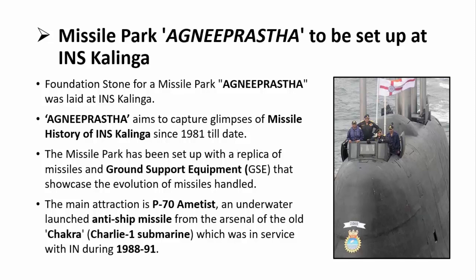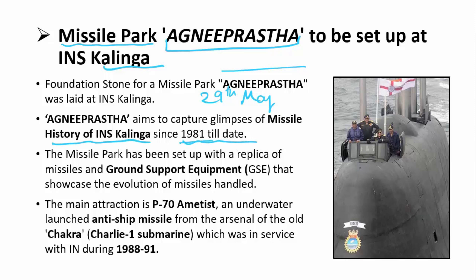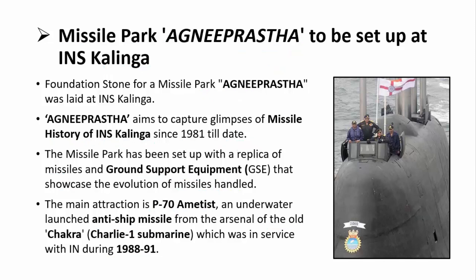INS Kalinga also laid the foundation stone for a missile park named Agni Prastha on 29th May. This park aims to capture glimpses of INS Kalinga's missile history since its founding in 1981 and will be dedicated to the officers, sailors, and support staff. It features replicas of missiles and ground support equipment showcasing the evolution of missiles handled by INS Kalinga. The main attraction is the P-70 Ametist, an underwater-launched anti-ship missile from the arsenal of the old INS Chakra submarine, which served in the Indian Navy from 1988 to 1991.